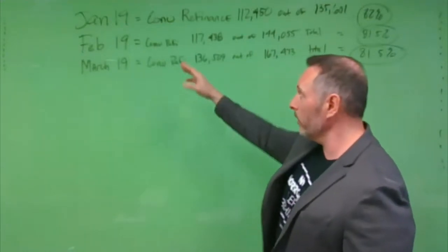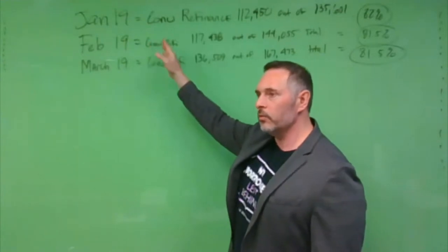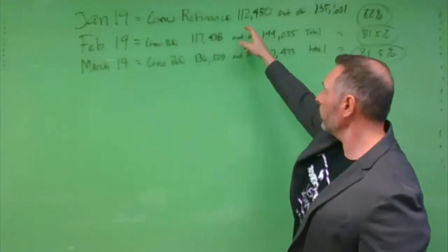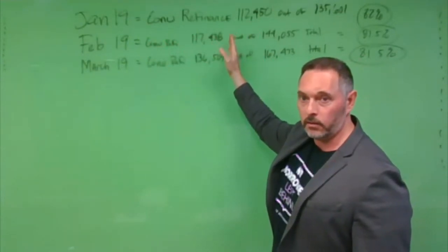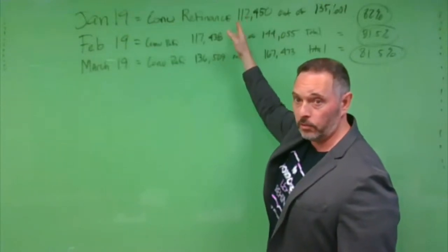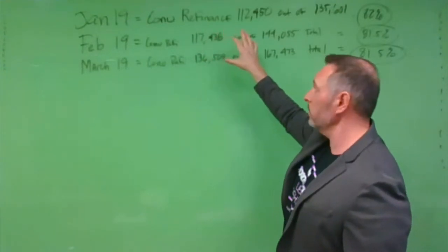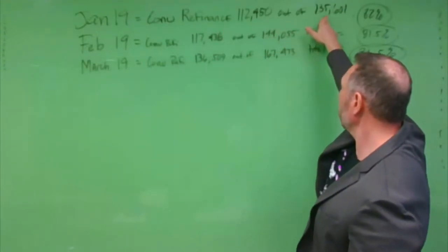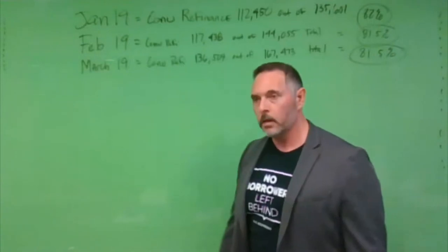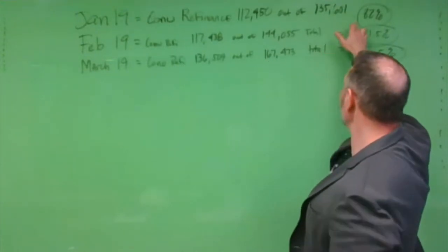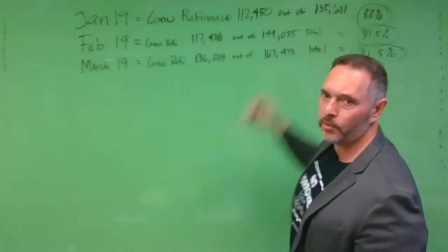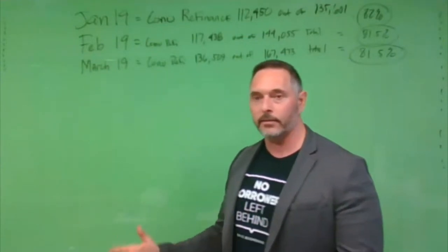In January of 2019, conventional refinance loans were 112,450 total conventional refinance transactions. The total refinance transactions in January of 2019 was 135,601. The conventional refinances accounted for 82% of the entire refinance market in that month.